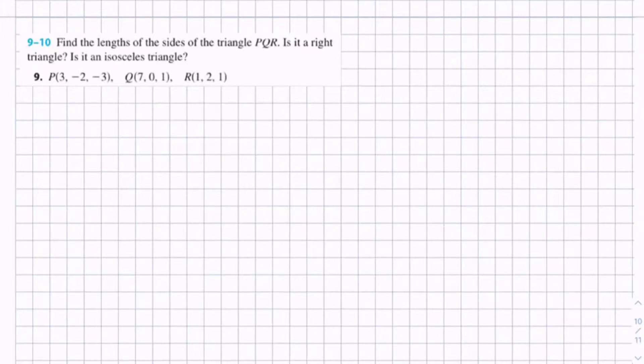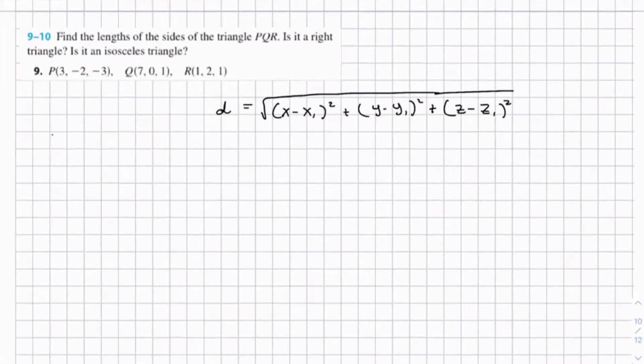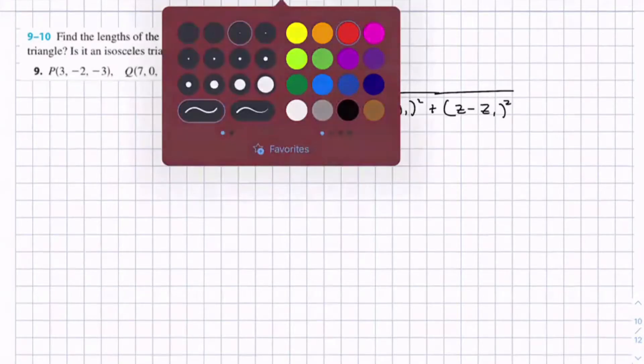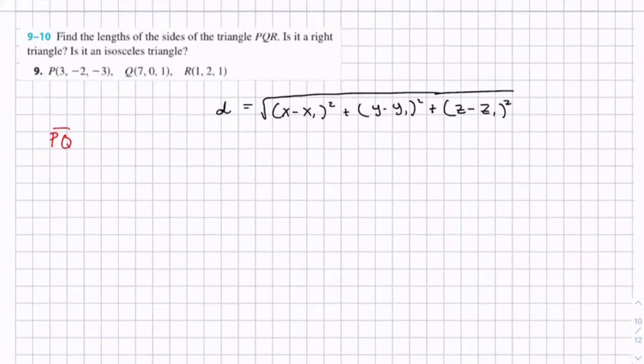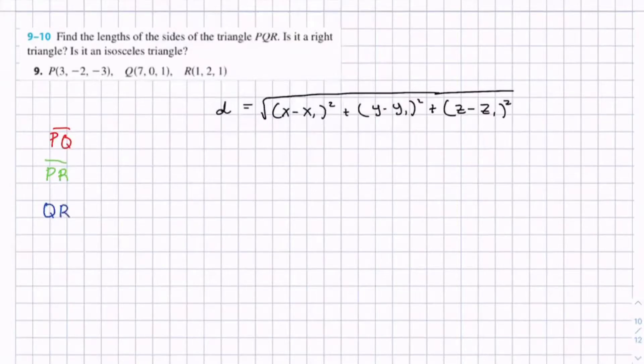We'll use the formula for the distance between points in 3D: d equals the square root of (x - x₁)² plus (y - y₁)² plus (z - z₁)². We're going to do this for segments PQ, PR, and QR - the three sides of our triangle.